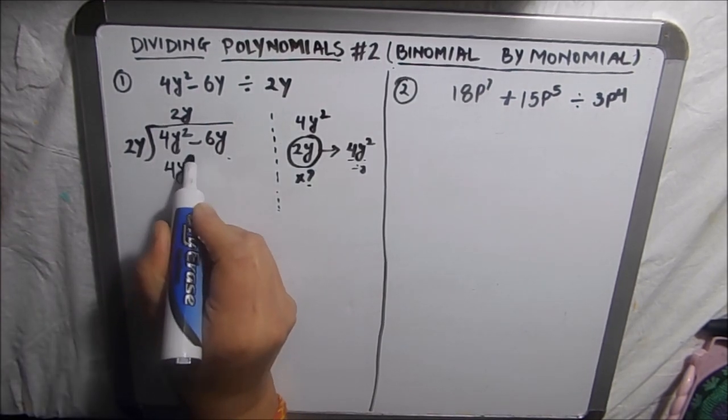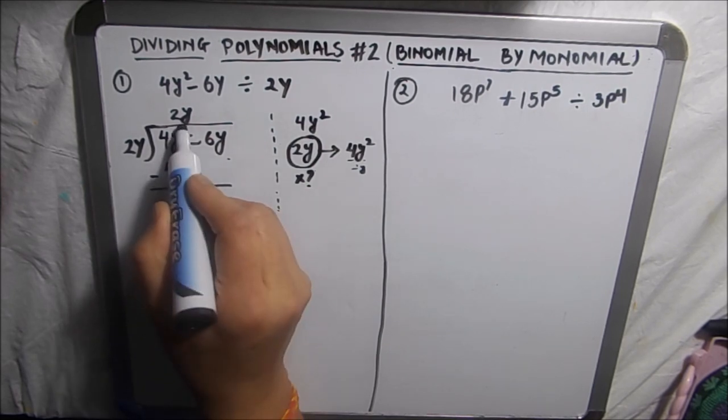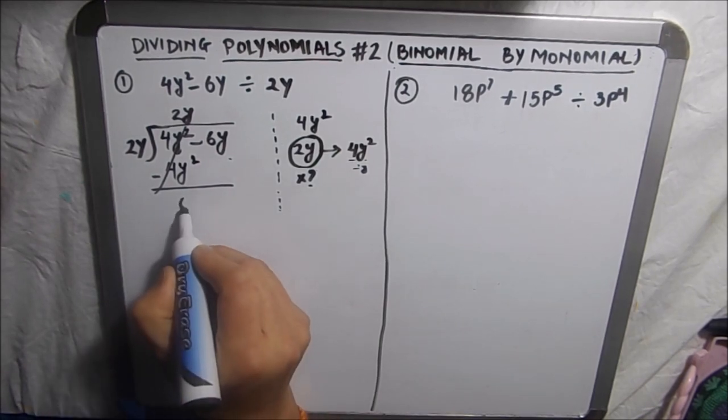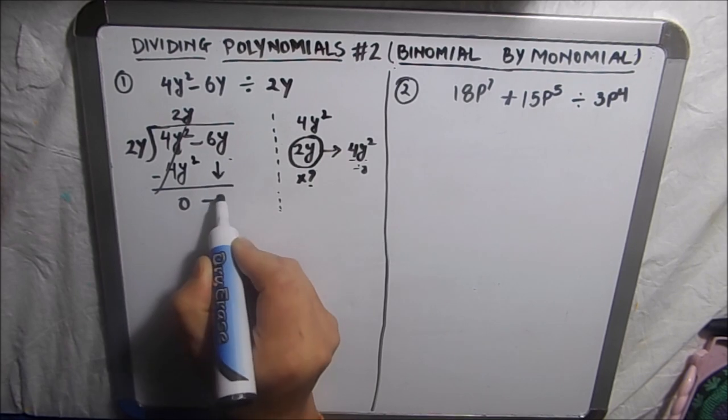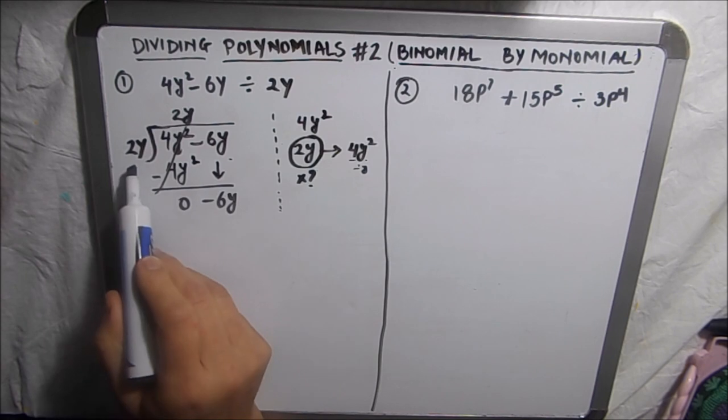So 4y² and then we will subtract the two numbers as in normal division. So this gets cancelled. We will drop down the next term which is 6y.